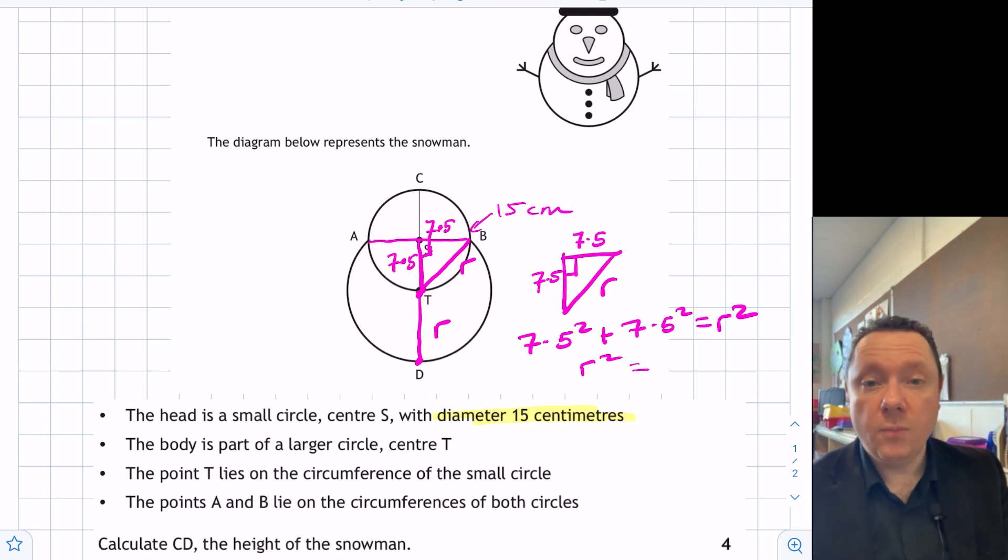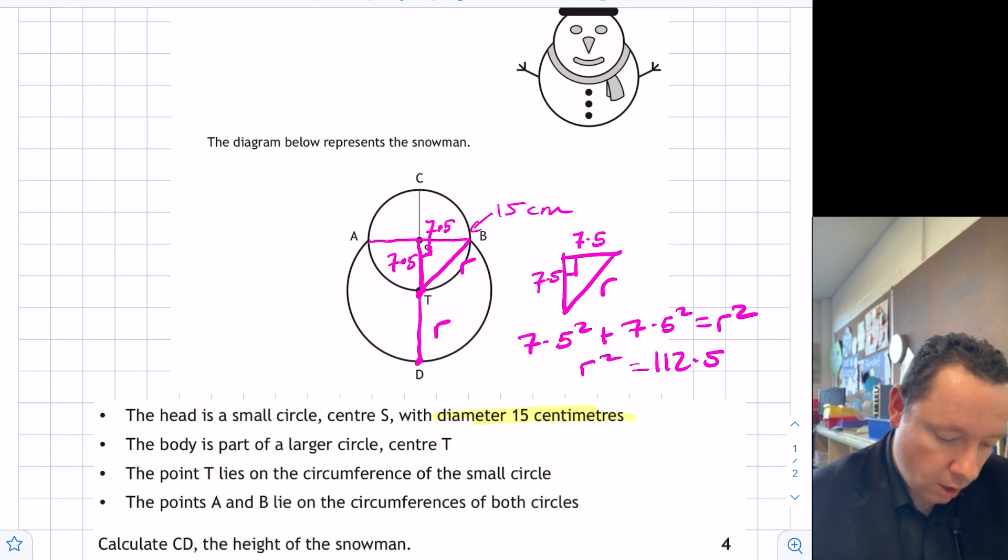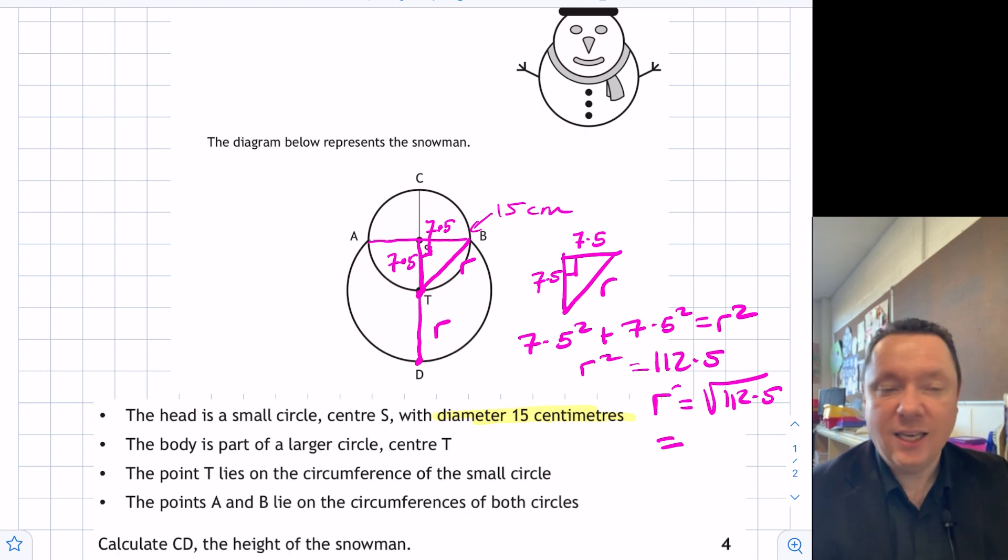So 7.5 squared plus 7.5 squared is 112.5. So R must be the square root of 112.5, which equals 10.6066. So 10.6 centimeters.